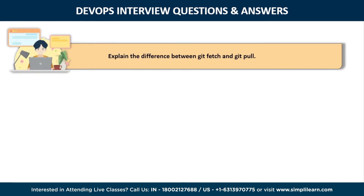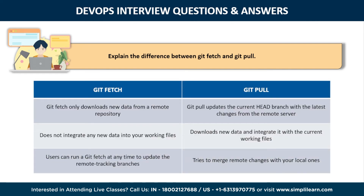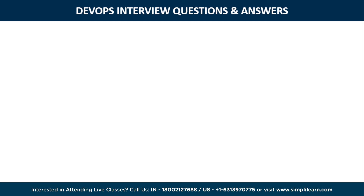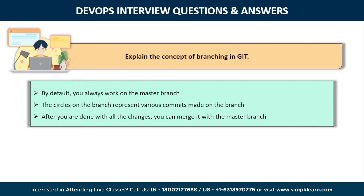Next is: explain the difference between git fetch and git pull. Git fetch only downloads new data from a remote repository, whereas git pull updates the current head branch with the latest changes from the remote server. Git fetch does not integrate any new data into working files, whereas git pull downloads new data and integrates it with the current working files. Users can run git fetch at any time to update remote tracking branches, whereas git pull tries to merge remote changes with your local ones. Regarding branching in Git: you can create a new branch to build a new feature. By default, you always work on the master branch. After completing all changes, you can merge the branch back into the master branch.